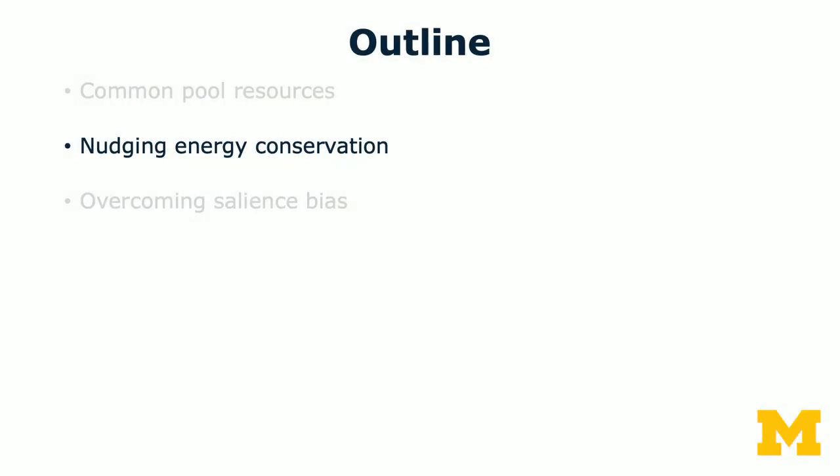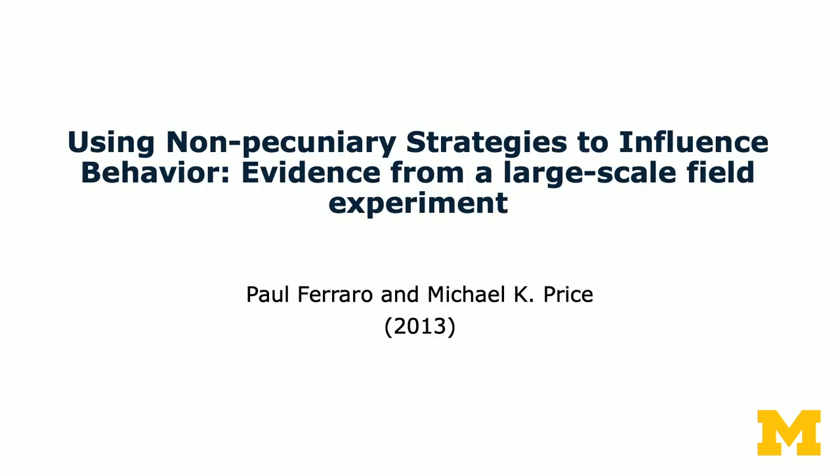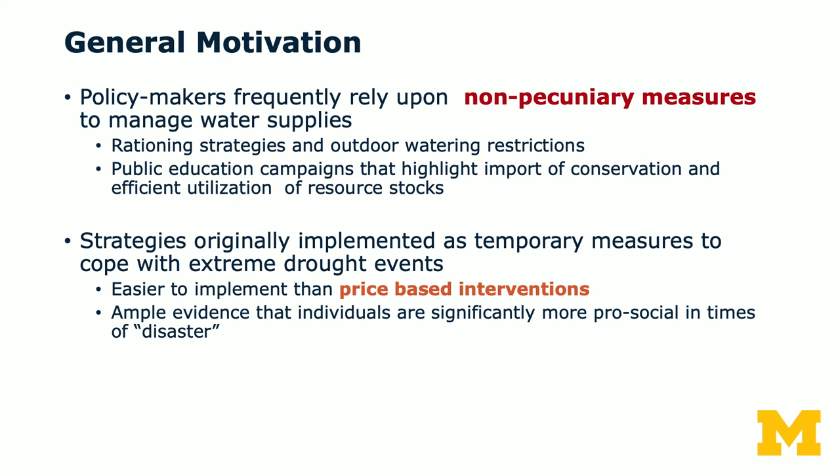So what we're going to do now is look at whether we can use data to nudge people's energy conservation behavior. I'm going to cover two studies, both co-authored by Paul Ferraro and Michael Price. The idea is to use non-pecuniary strategies to influence behavior. Policymakers often rely on non-pecuniary measures to manage water supplies. The traditional strategy has been price-based interventions — for economists, one can think about a downward sloping demand curve. If you pump up the price, you reduce the demand for water. We're going to look at an alternative strategy that doesn't rely on money, but instead relies on nudges.